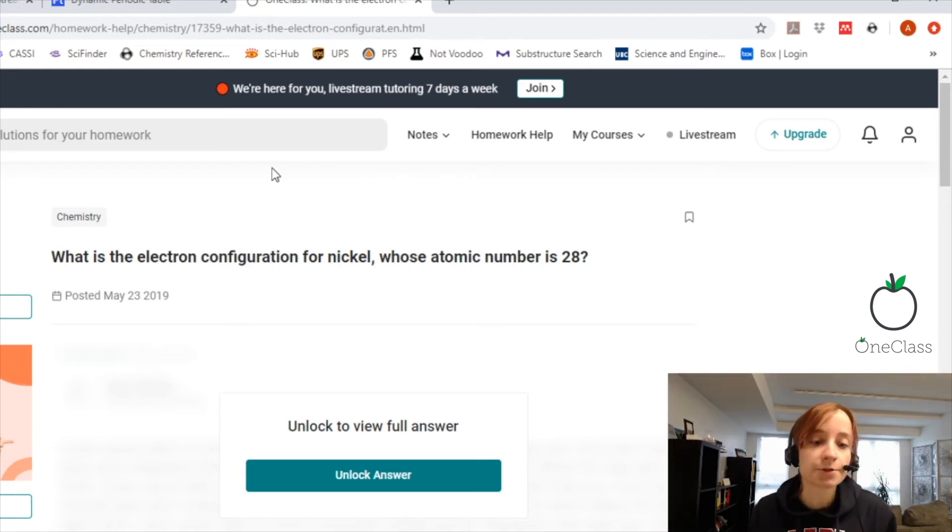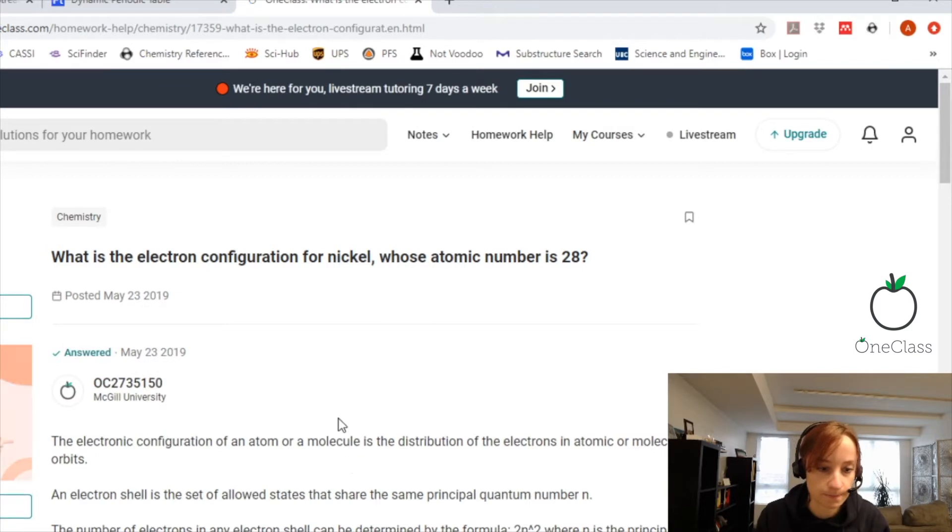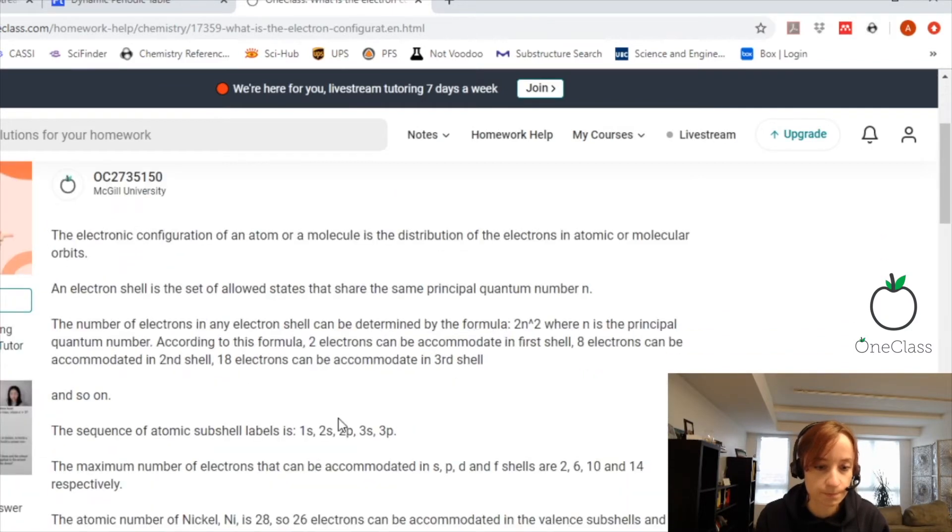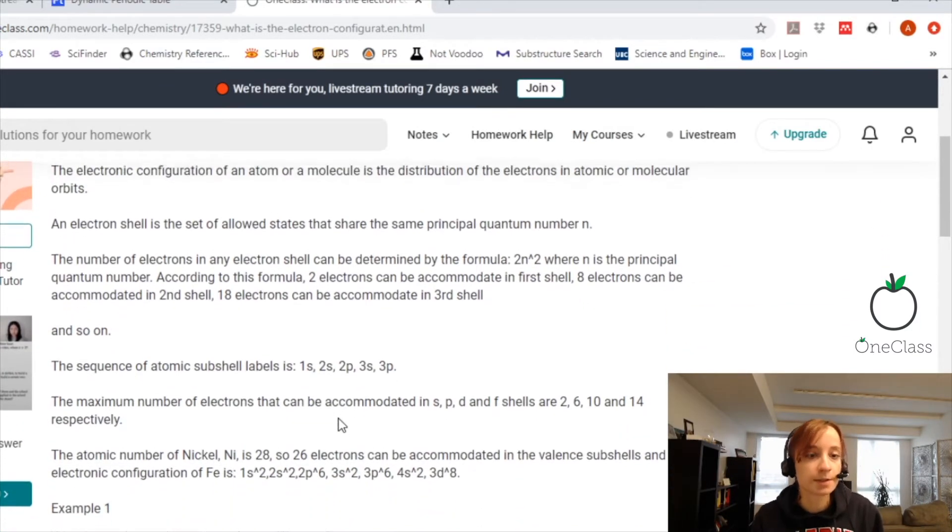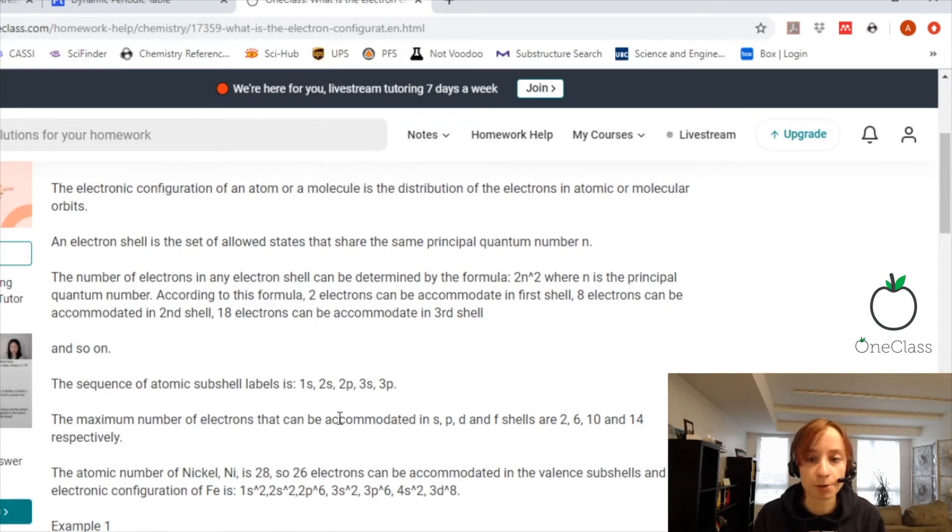What is the electron configuration for nickel, whose atomic number is 28? The electron configuration of an atom or a molecule is the distribution of electrons in atomic or molecular orbitals. They don't all sit together.